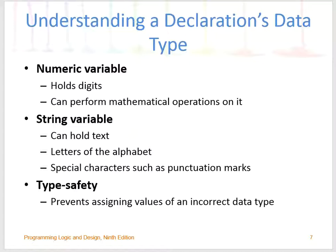Numeric variables are variables that can hold numbers and perform any arithmetic operations. When you say strings, they are a collection of characters — for example, a name like K-H-A-R-I-S. Type safety prevents assigning values of an incorrect data type, so you have to be very careful about what data type you're going to use for your program.